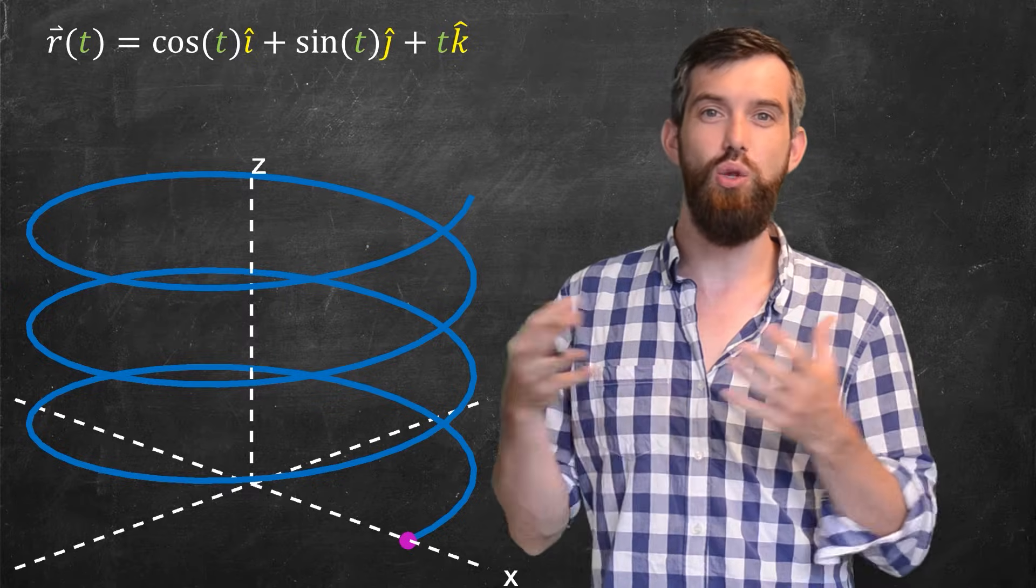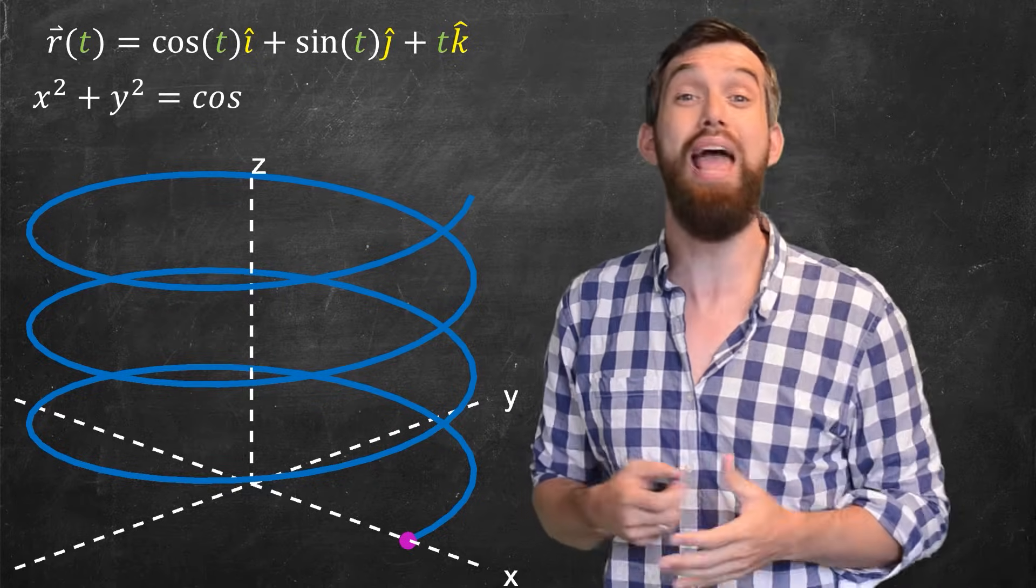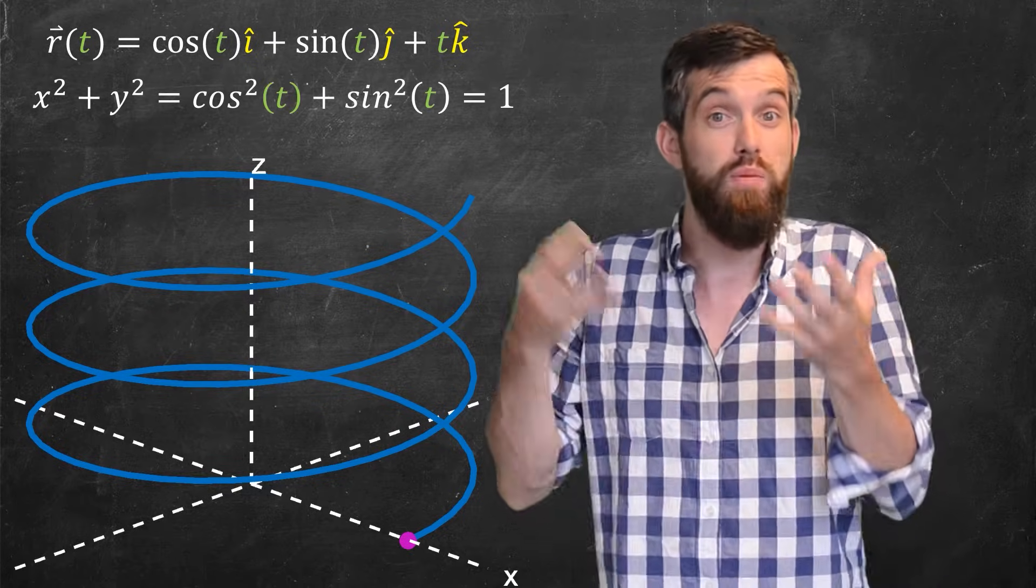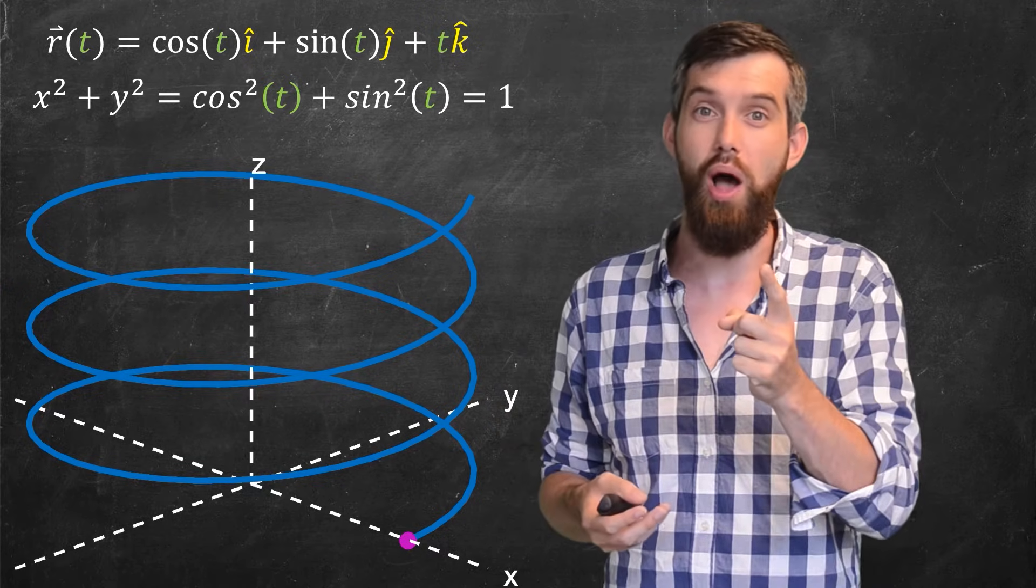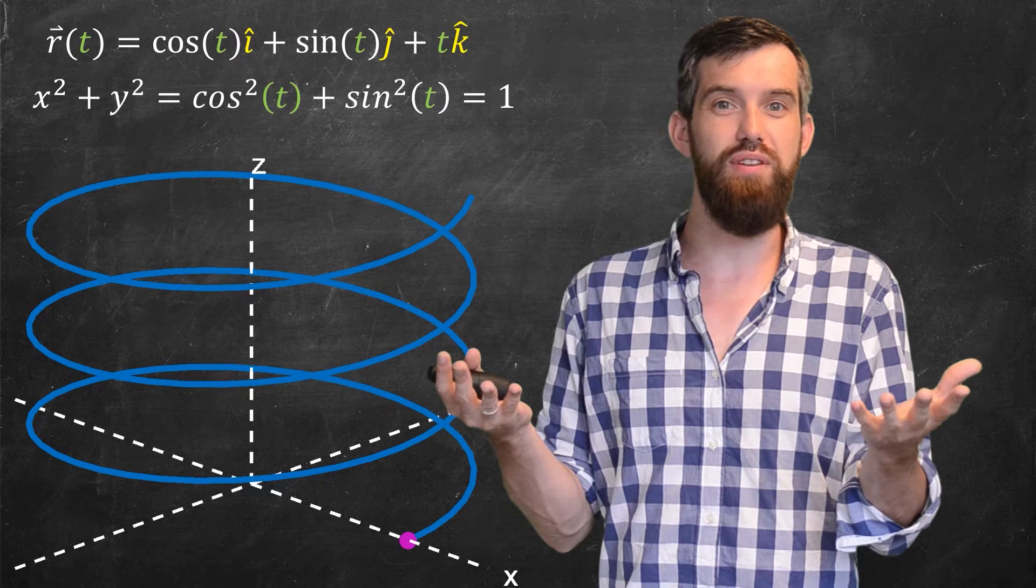And if I consider the x and the y, if I do x squared plus y squared, so this is cos squared plus sin squared, by the Pythagorean identity, this is just equal to 1, this is the equation of a circle.